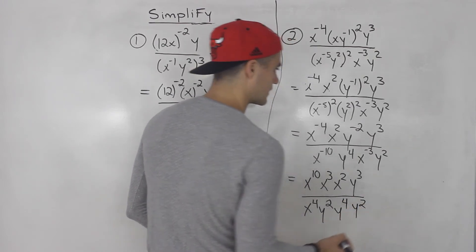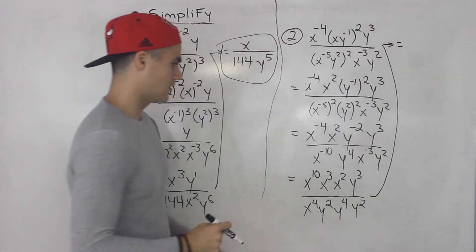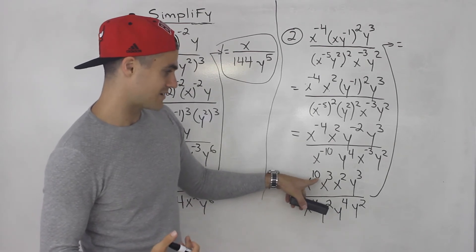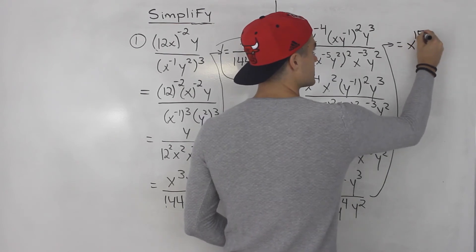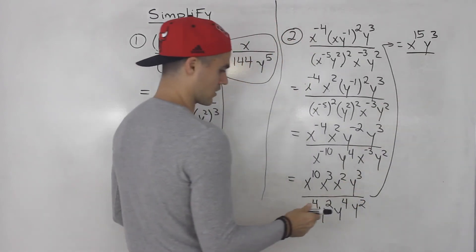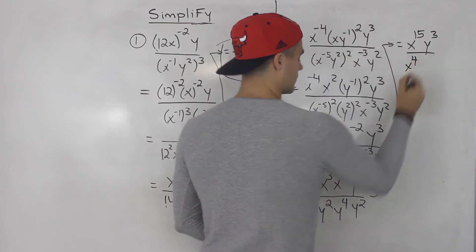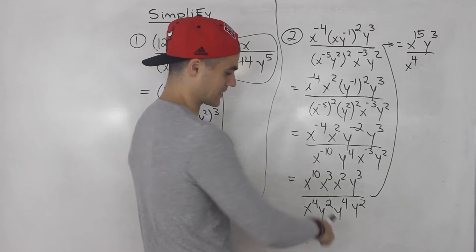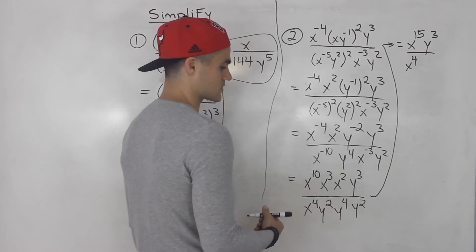Continuing — notice all of these have the same base, so we add the exponents: 10 plus three plus two gives us 15, so we'll have x to the 15. The y to the three will still be there. All over: x to the four — nothing else has a base of x in the denominator. Then these all have the same base, so we add the exponents: two plus four plus two gives us y to the eight.